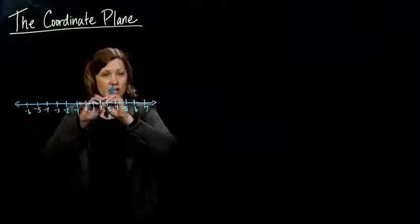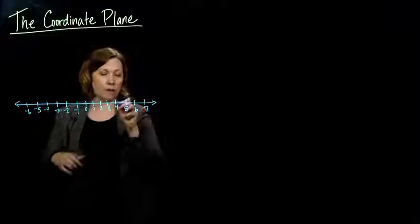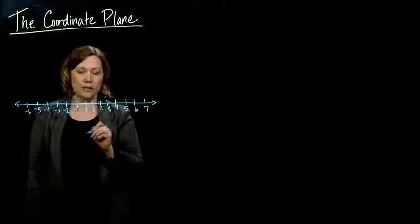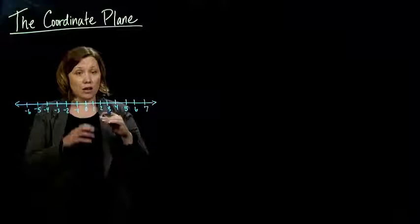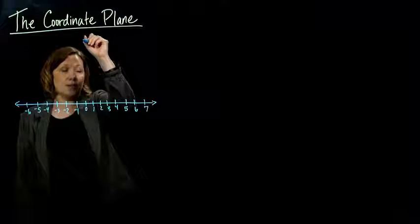This is how we represent one number with a number line. If we wanted to represent the number 4, we just put a dot on the number 4. But if we have two numbers that go together that we want to represent, we have to have two number lines.